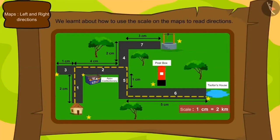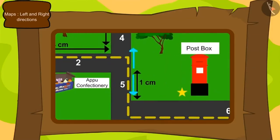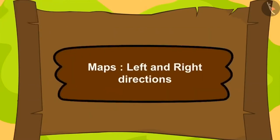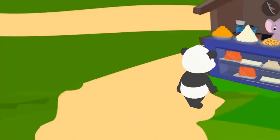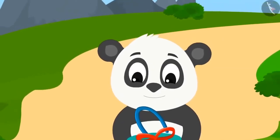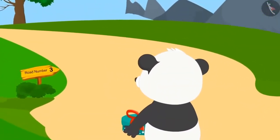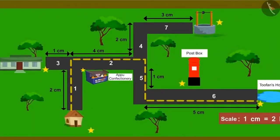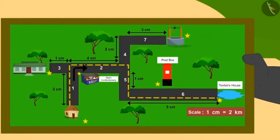To read directions — if we reach a point, how will we decide which path to go? We need to know about right and left directions. In this lesson we will learn about right and left directions used in maps. Golu had bought sweets from Appu's confectionery for Tufan. Now Golu started his journey again. After going some distance he saw the board of road number 3. According to uncle's map he should have been on road number 2 — Golu was to go right from Appu's confectionery but took a left turn, which was road number 3.